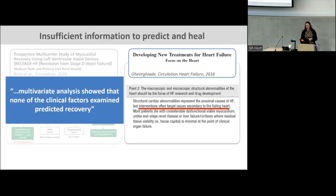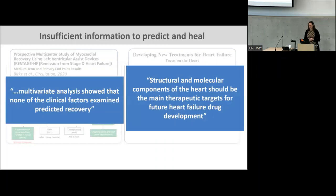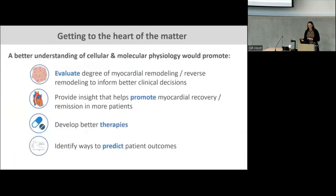In a report summarizing discussions of heart failure treatments at an FDA-facilitated meeting of clinicians and researchers, one of the major take-home messages was that while current therapies for heart failure really target secondary effects like neural hormonal regulation and renal function, going forward, therapies for heart failure really should be focused on the structural and molecular abnormalities associated with heart failure directly in the heart. If we had a better understanding of the molecules in the heart, we could evaluate the degree of myocardial remodeling in a person who has received an LVAD, develop better therapies, better therapeutic targets, and identify ways to predict patient outcomes.